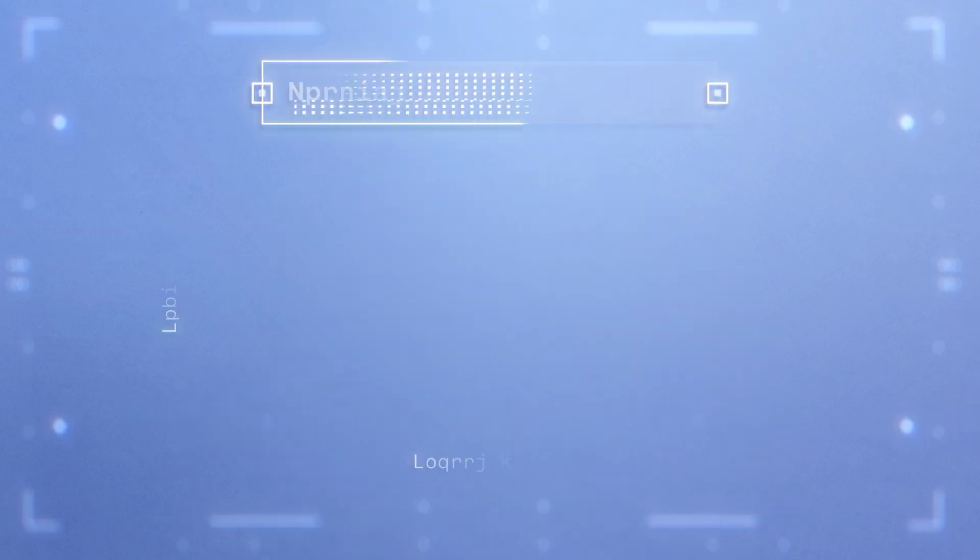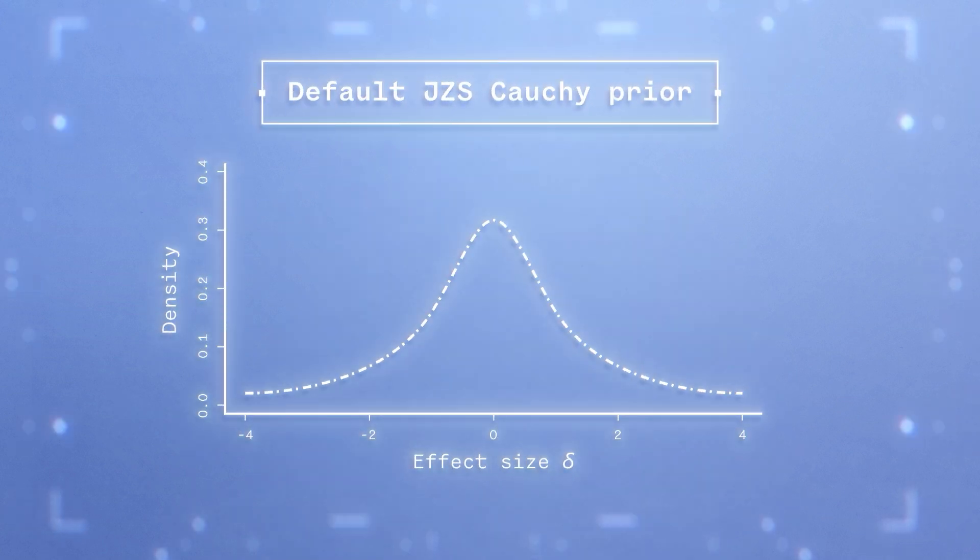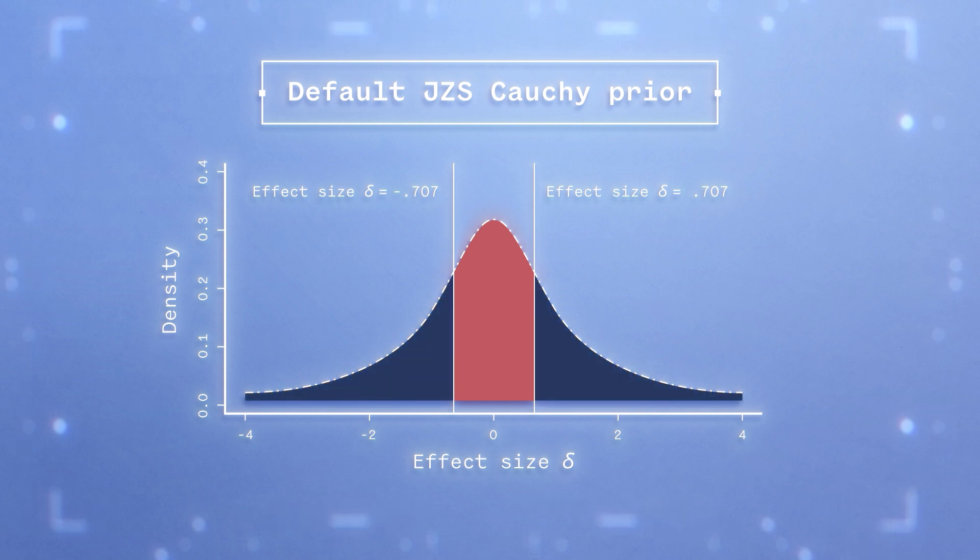The JZS prior involves a scale parameter r that quantifies the interquartile range of expected effect sizes under H1. The default value of the r parameter for a one-sample t-test is set at 0.707. This means that the alternative hypothesis predicts that 50% of expected effect sizes will fall within the red area under the curve you see on the graph, and 50% of expected effect sizes will fall within the blue area.